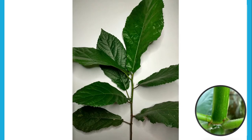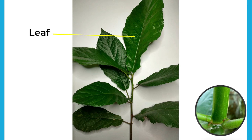Now we will start with the different parts of the shoot system, beginning with the leaf or leaves. It is where photosynthesis takes place since the green pigments, as you can see on this plant, are abundant in this organ. This is what we call the chlorophyll.